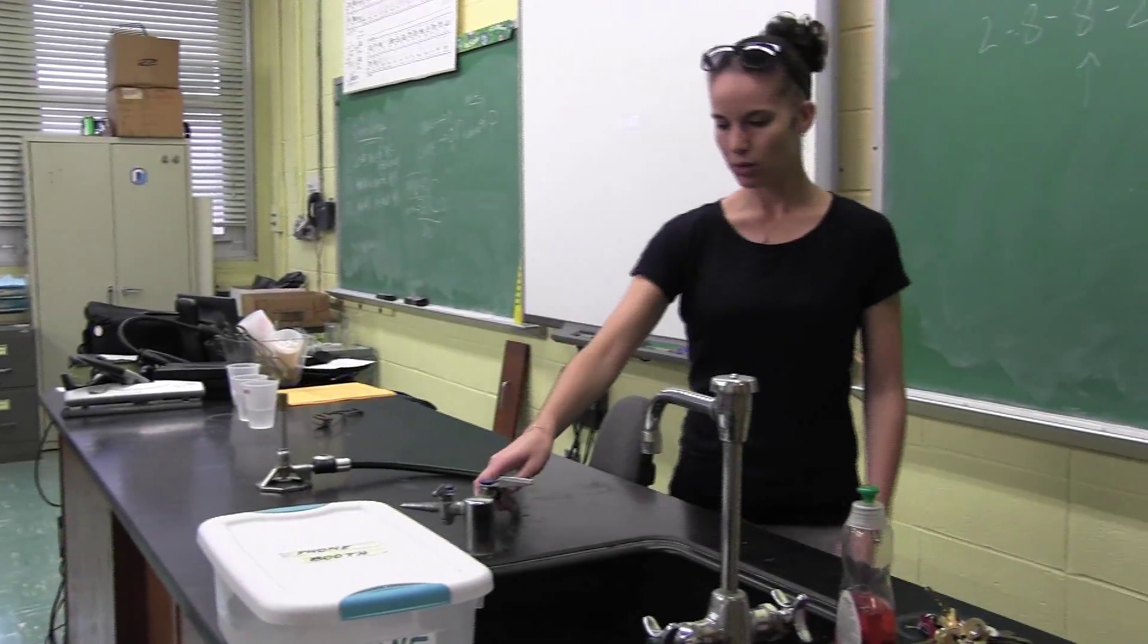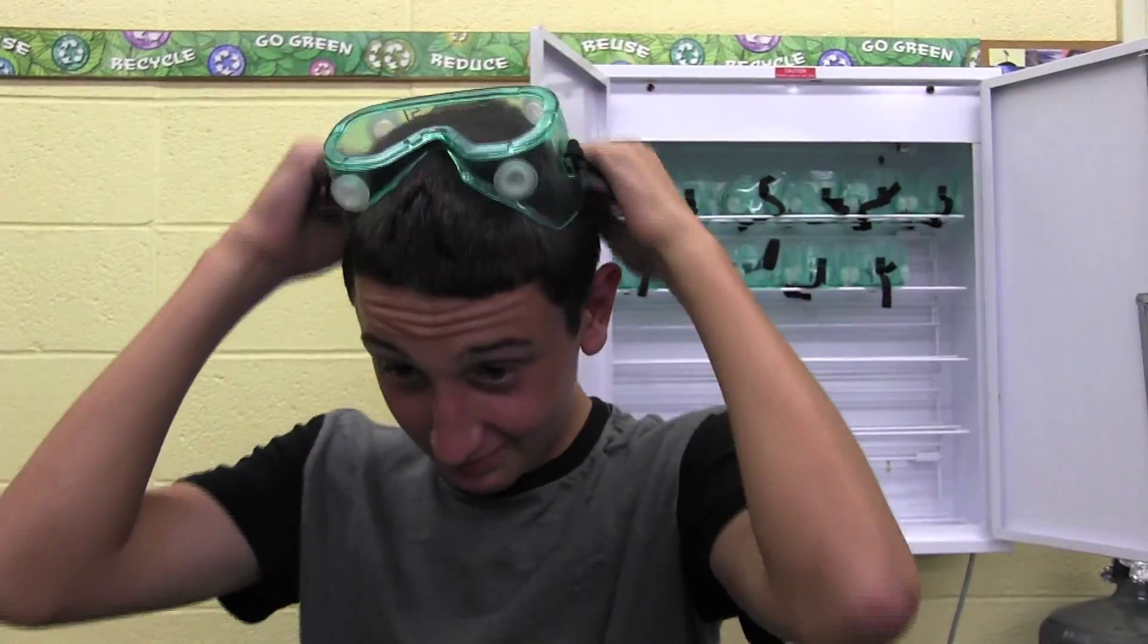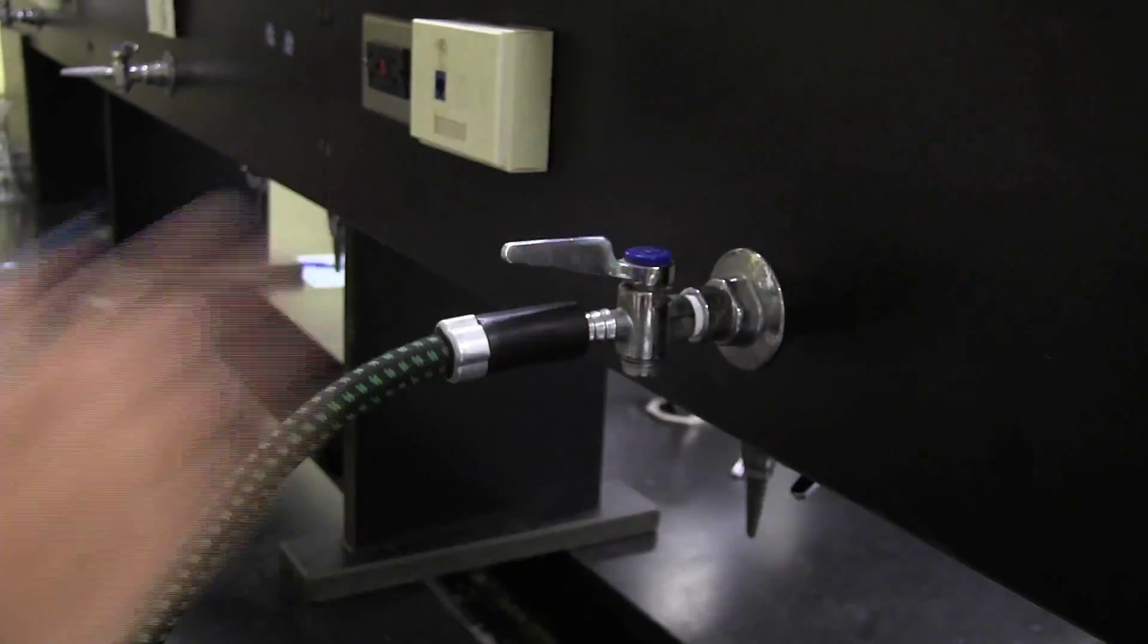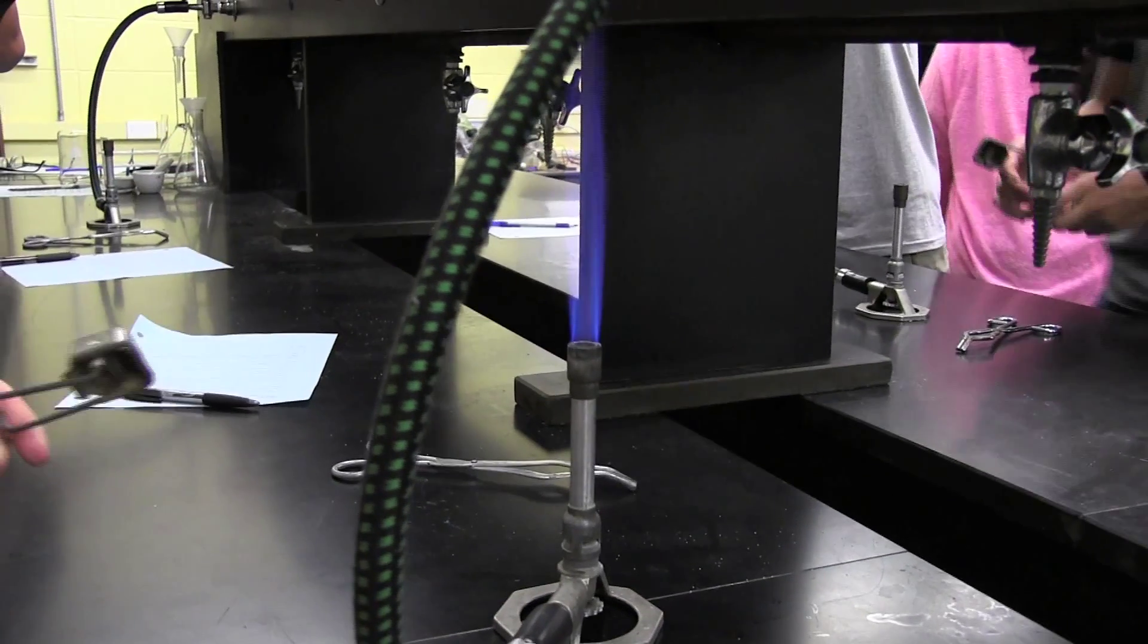Does anyone remember how you light a Bunsen burner? And I should be wearing my goggles first. So, step one, gas on, parallel to the nozzle, and then we're going to strike. Okay, and now we have a flame.